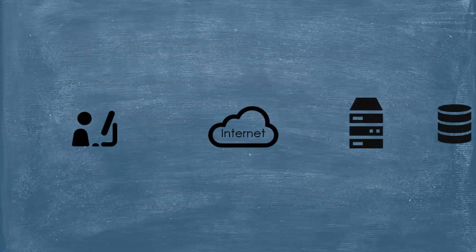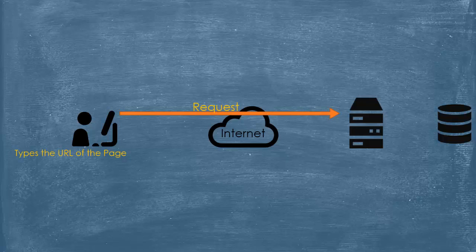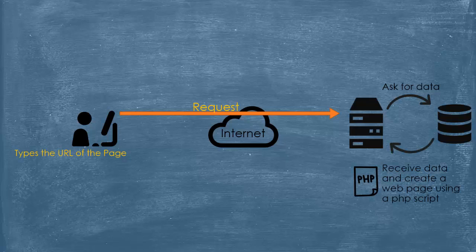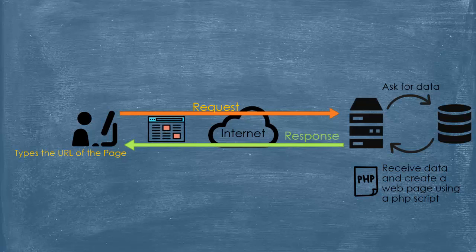This is a similar diagram to the previous one. However, this illustrates requests in a dynamic web page. We have the same process at first — the user enters the URL and the request is sent. But the web page is not already created. The user is asking for a web page that doesn't exist physically on the server, but the information that will be displayed in it is in the database. So the server asks for the specific information from the database, and then the PHP script takes care of it and converts it to a web page. Finally, the web page is sent back to the end user via a response message.